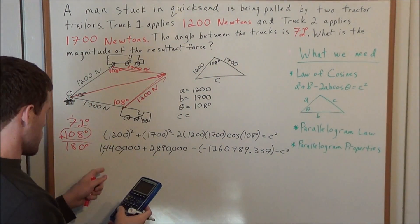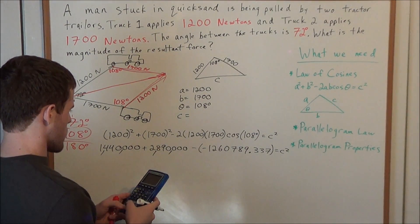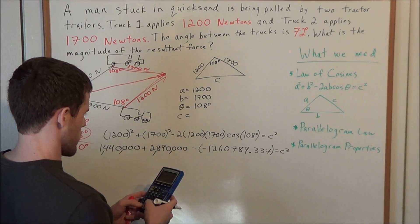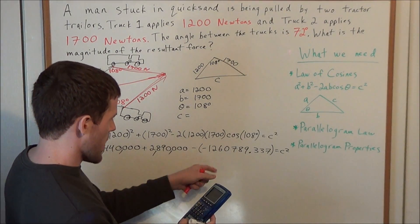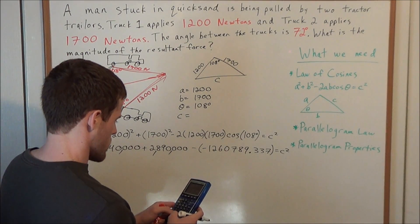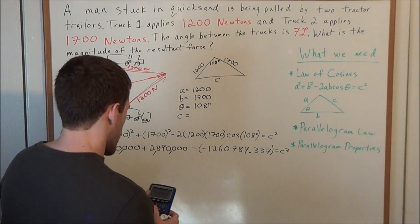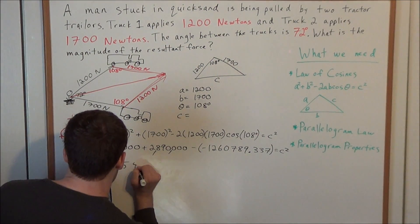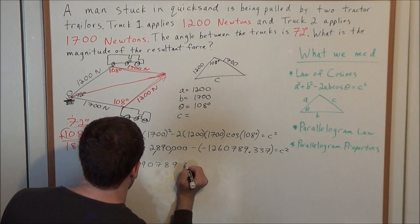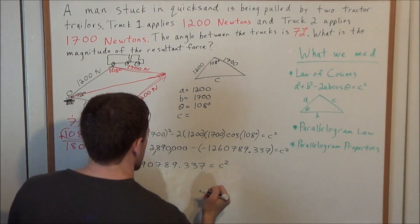But now let's add all of this together. So we have 1440000 plus 2890000, now minus a negative, so I am just going to add this: 1260789.337. And now we are going to get 5590789.337, this is equal to C squared.